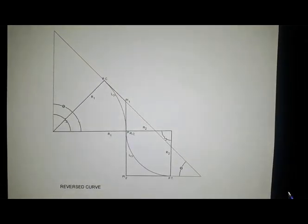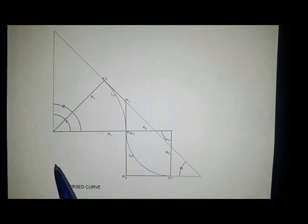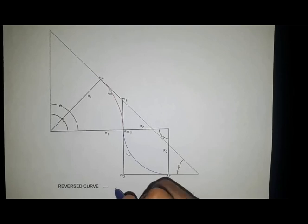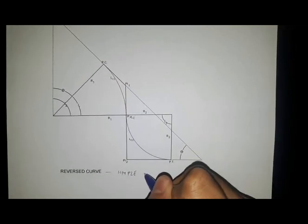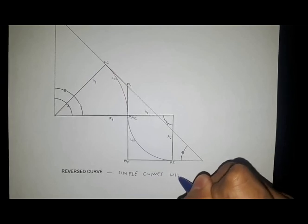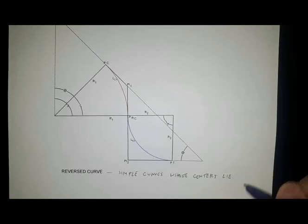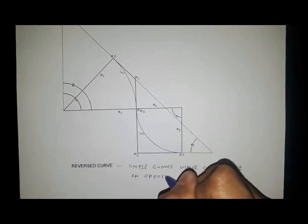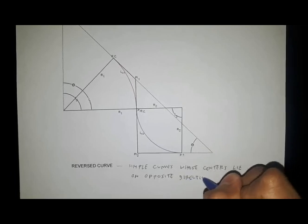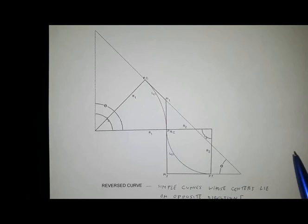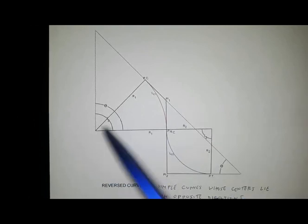A reverse curve is made from combinations of simple curves with centers that lie on opposite directions. The keyword is simple curves whose centers lie on opposite directions. Observe that the first curve and the second curve have centers on different directions of the curvature.